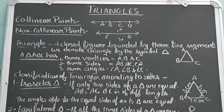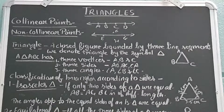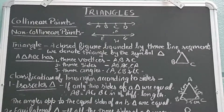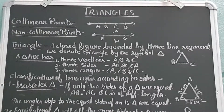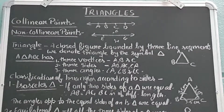Hello and welcome. In this vlog I'll explain triangles, but before that I'll explain the difference between collinear and non-collinear points. All those points that lie on the same straight line are called collinear points. As we can see in this figure, one line is drawn and points A, B, C and D are lying on the same line.